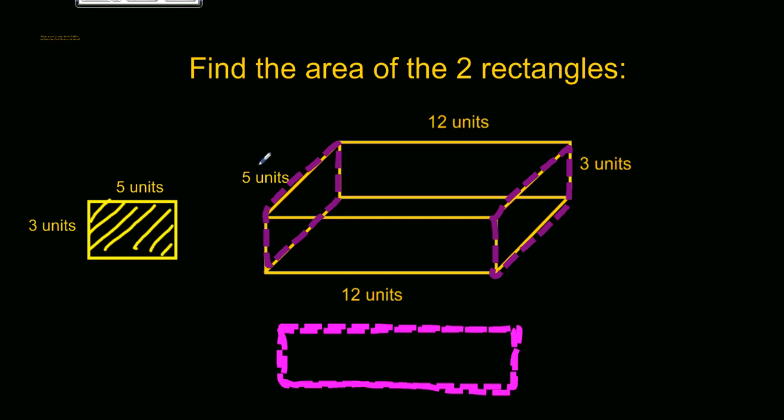But in a three-dimensional figure, this five is often referred to as width. So this would be our width. I'm going to just put equals W, width. Twelve would be the length, and three would be the height. So when you add the third dimension, we just call it something a little bit different. But when we find this area, in this particular one, we come up with 15 units squared.